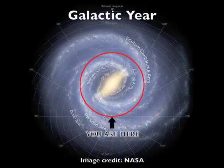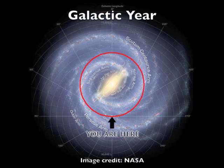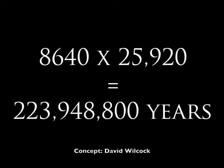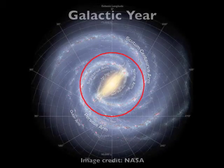The Milky Way galaxy has a rotational period that I like to call the galactic year, lasting approximately 224 million years. Our solar system is related to the larger cycle through number — there are 8,640 great years in the galactic year. It's amazing how the earth's precessional cycle, the number of the sun, and the decade harmonize with the galactic year.